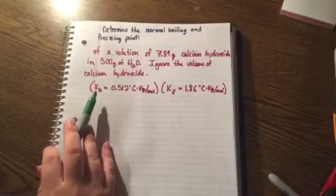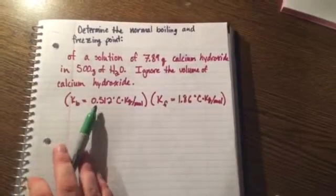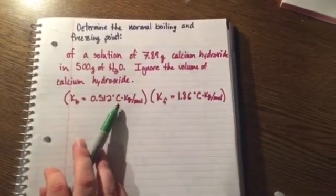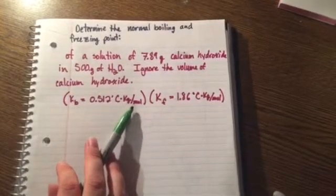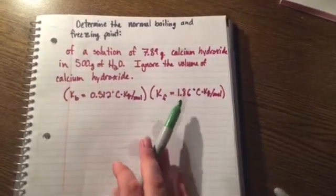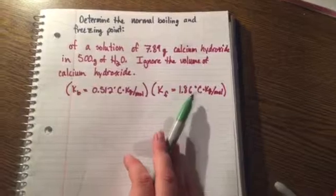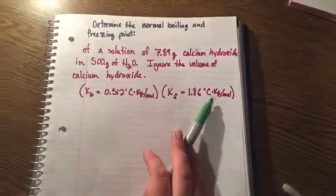It is given to us that our Kb is 0.512 degrees Celsius times kilogram per mole and our Kf equals 1.86 degrees Celsius times kilogram per mole.